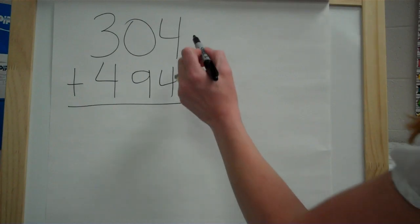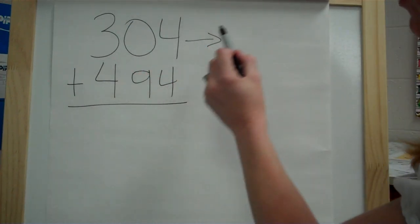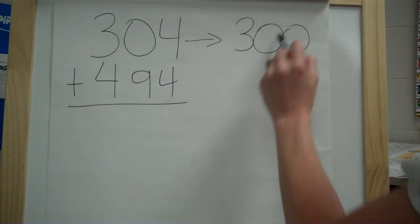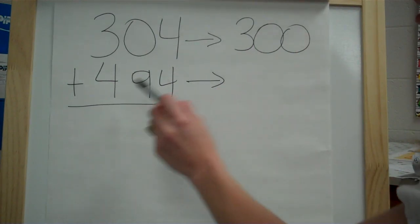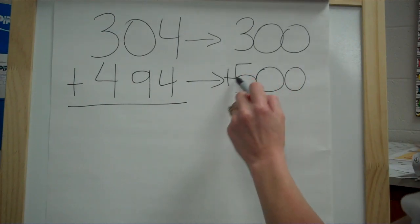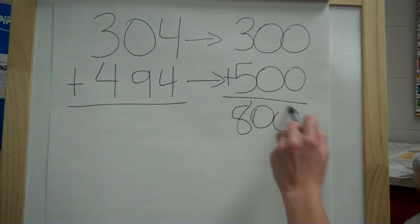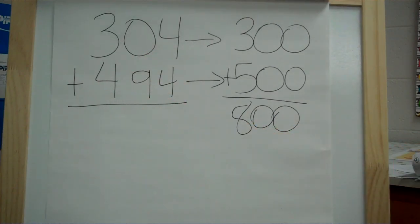All right, here we go. All right, so check your work as I check it up here, as I do it up here. 304 would round to 300. 494 would round to 500. So 300 plus 500 is 800. So 304 plus 494 is about 800.